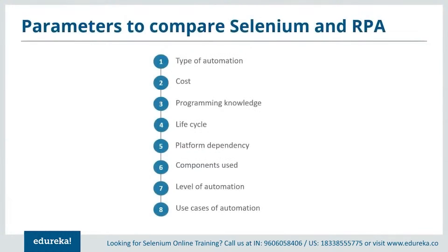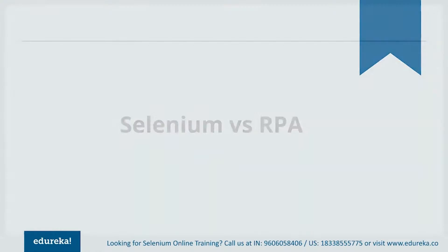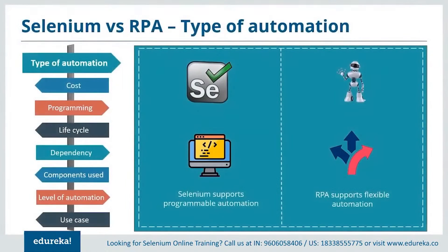Let's look at the parameters that will be taken into consideration for comparing these two automation giants. We'll compare them on: type of automation, cost, programming knowledge required, lifecycle, platform dependency, components used to automate a task, level of automation, and use case of automation. Starting with the type of automation: Selenium supports programmable automation whereas RPA supports flexible automation.